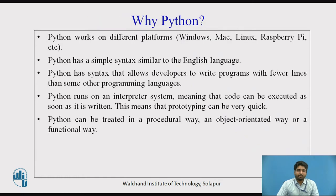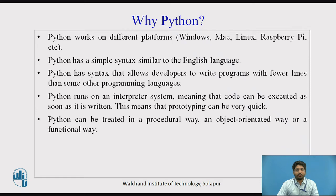So why Python? Python works on all different platforms like Windows, Mac, Linux, Raspberry Pi, etc. The syntax of Python is similar to the English language and is very simple. Python allows developers to write programs with fewer lines than some other programming languages. Python runs on an interpreter system, meaning that code can be executed as soon as it is written, so prototyping can be very quick. Python can be treated in a procedural way, an object-oriented way, or a functional way.